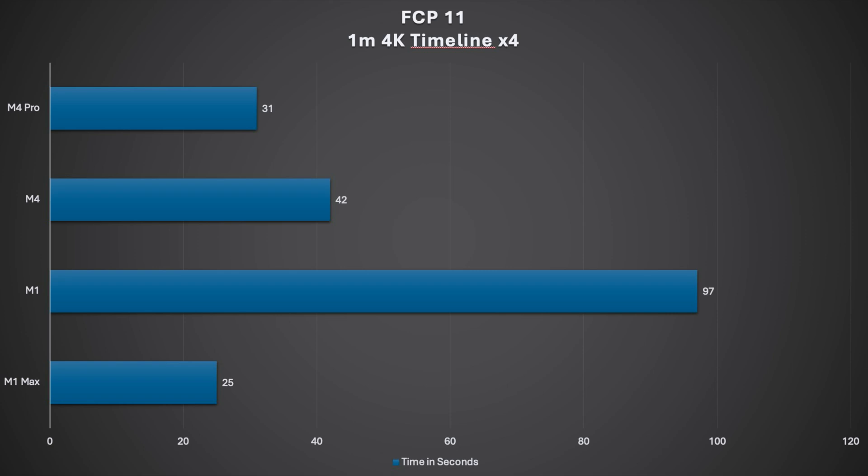Looking at the rendering times for the second test: the M4 Pro took 31 seconds, the M4 took 42 seconds, the M1 took 1 minute and 37 seconds, and the M1 Max took 25 seconds. The graphic on screen shows all values in seconds, same as the previous graphic.